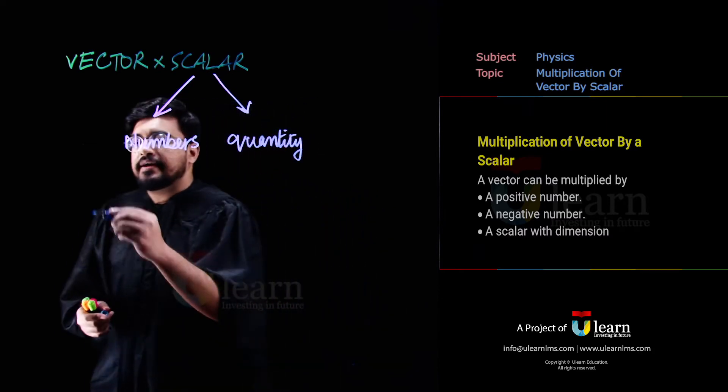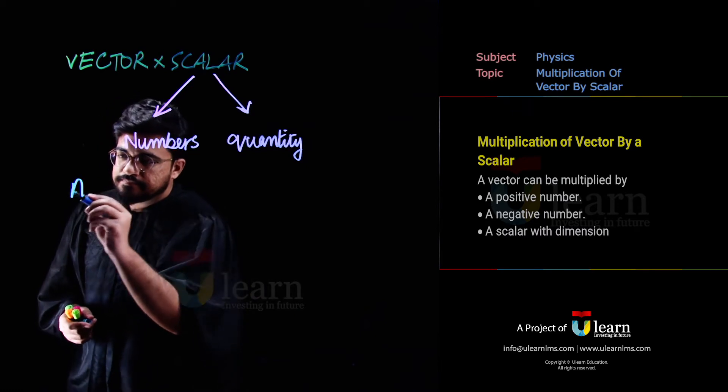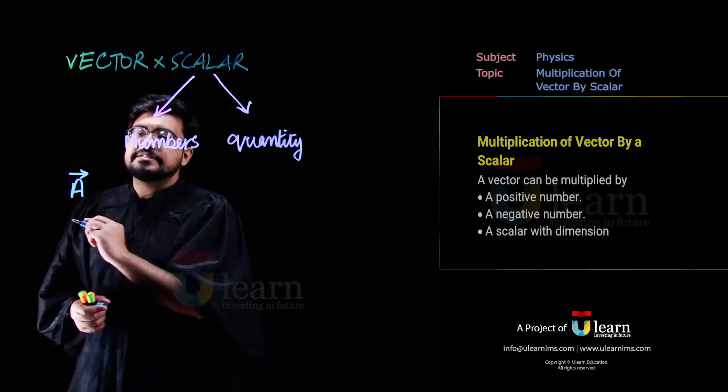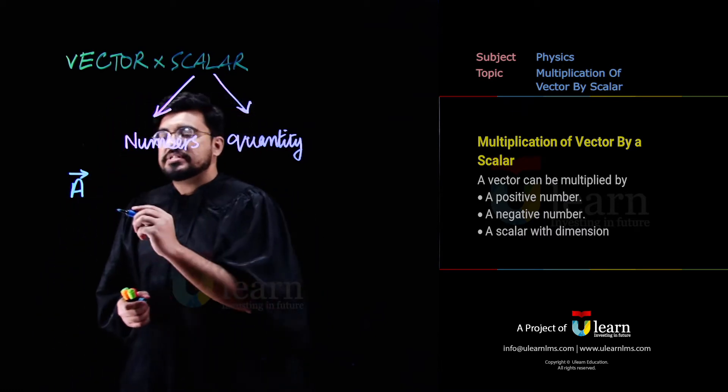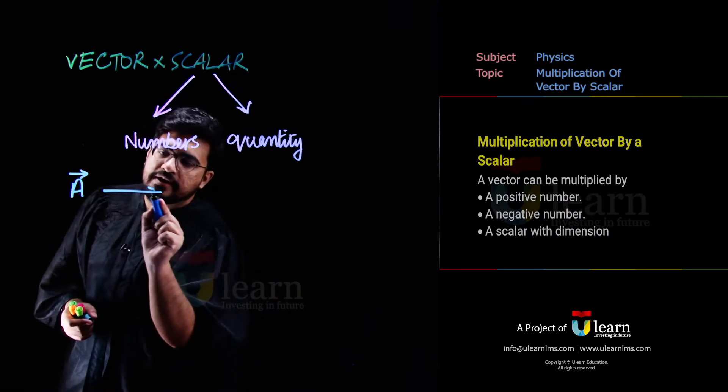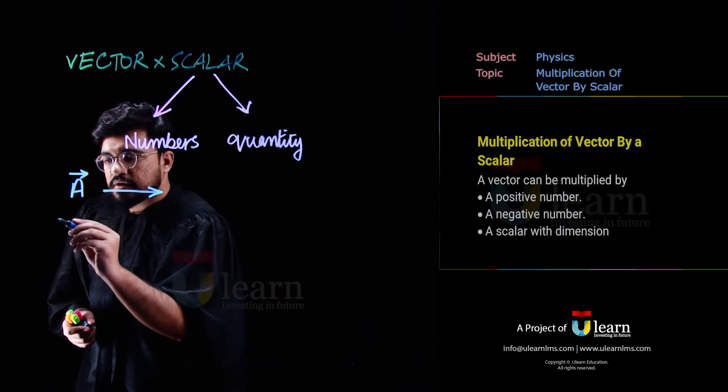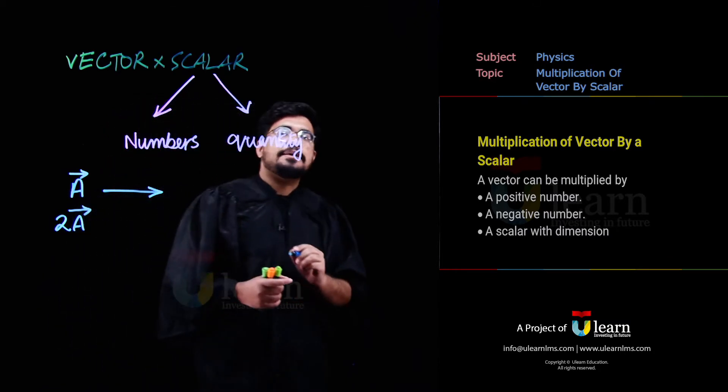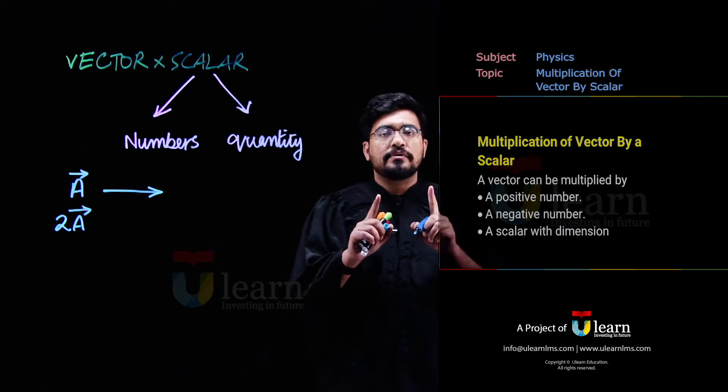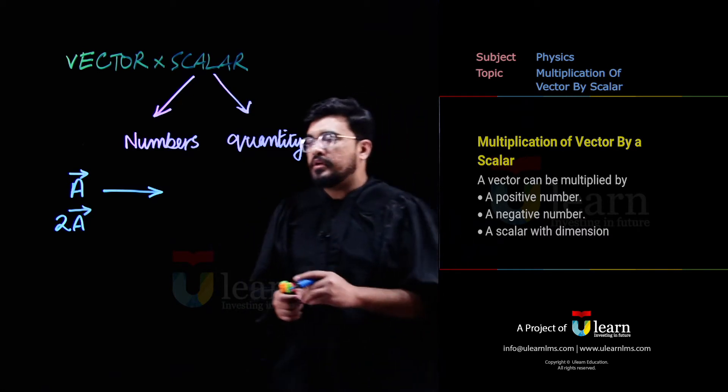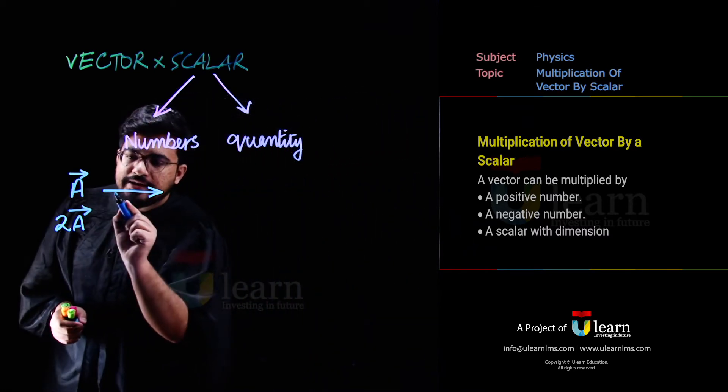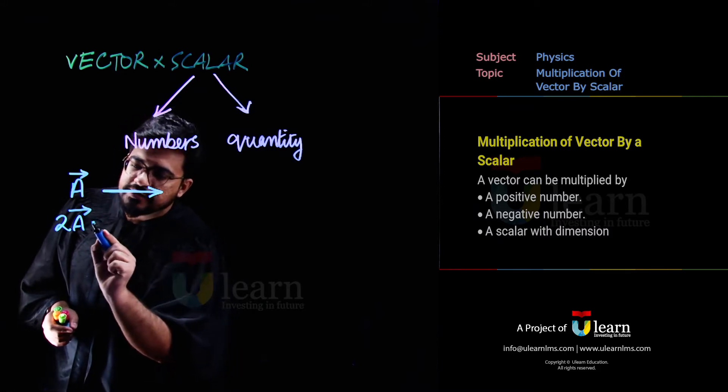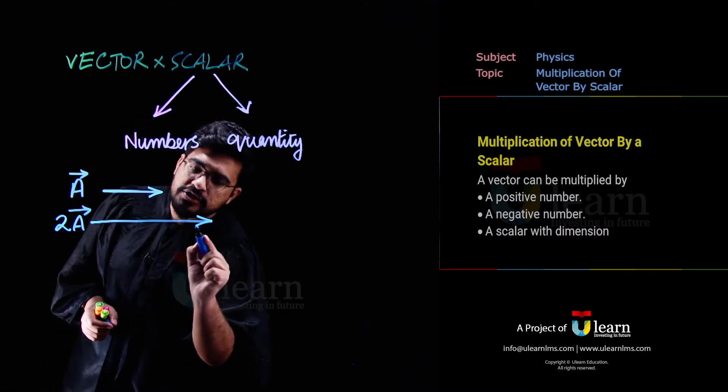Let's say, mere paas ek vector hai a. Maine isko kisi numerical number, yaani 2 se multiply kar diya. Ye ek vector tha, vector a. Maine isko 2 se multiply kia. Ye kya karega? Bas, sirf iski magnitude ko number times kar dega. Yaani magnitude vectorially represent karete hai, hum log length of the vector se. Vector ki length double ho jayegi.